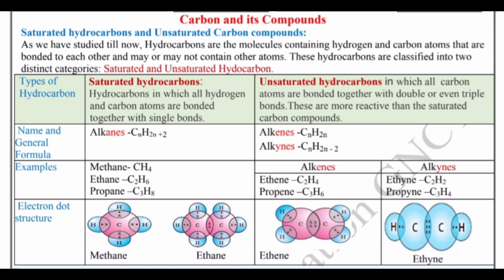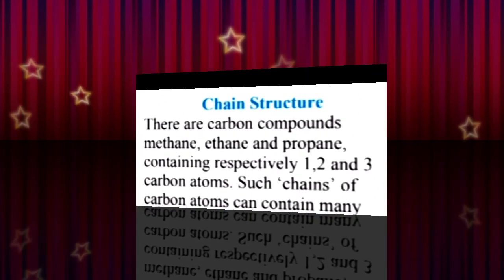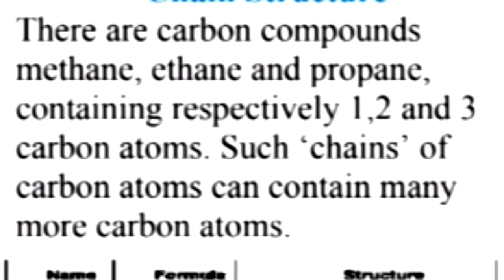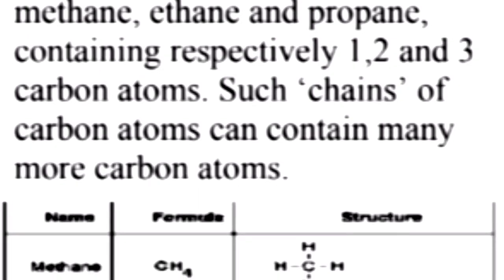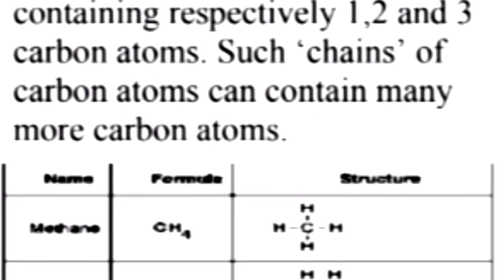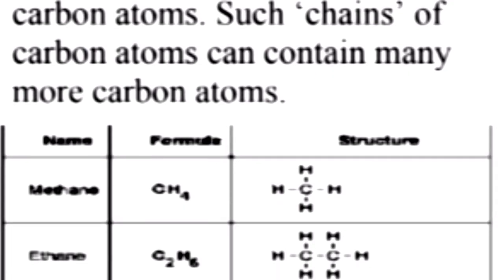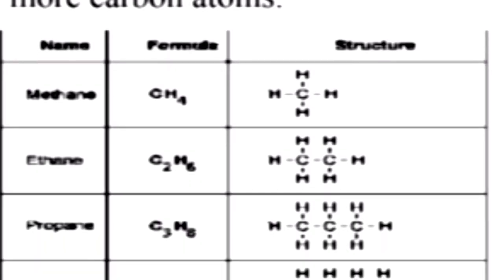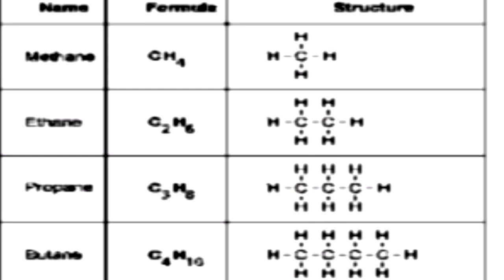As you can see, in methane one carbon atom shares electrons with four hydrogen atoms. Carbon compounds form chain structures by bonding with other carbon compounds.